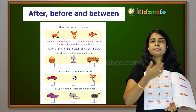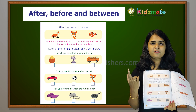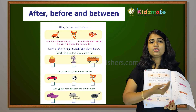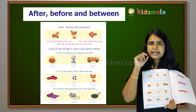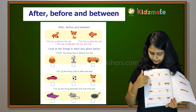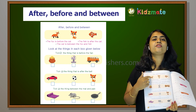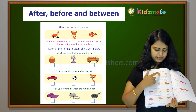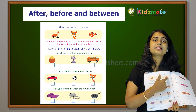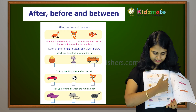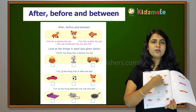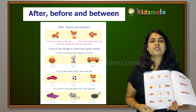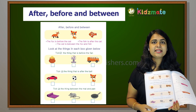After, before, between. The fox is before the cat. The fish is after the cat. The cat is between the fox and the fish.